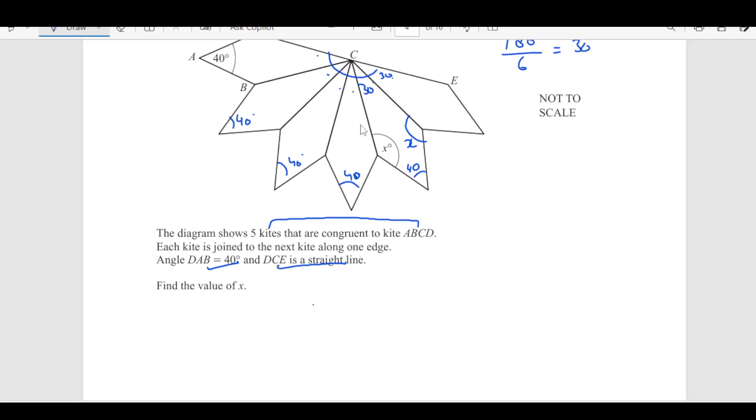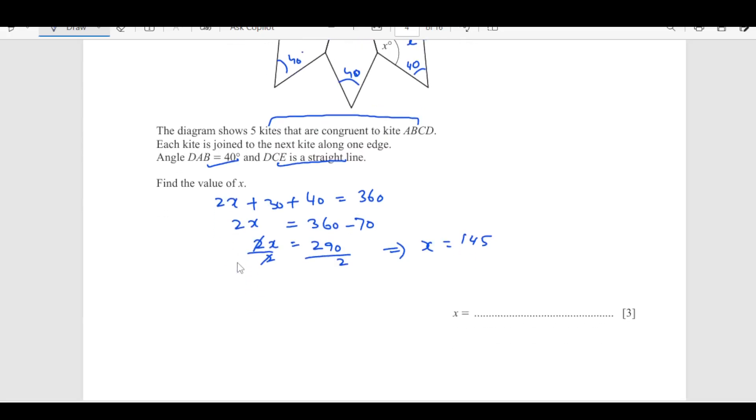So, now we have all the 4 angles here. So, we can find out the value of x. Now, in a quadrilateral, this kite here, we have x plus x that is 2x, 2x plus 30 plus 40. This is equal to 360. So, 2x is equal to 360 minus 70, which is 290. 2x divide by 2, divide by 2. So, x is equal to 145. This is our final answer.